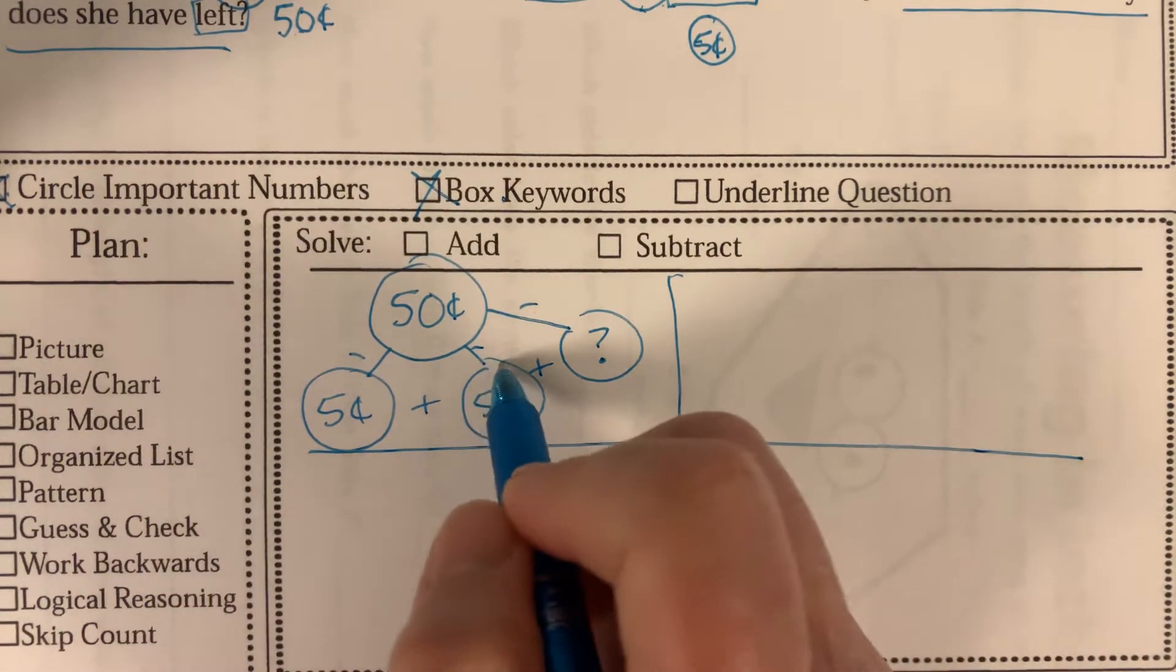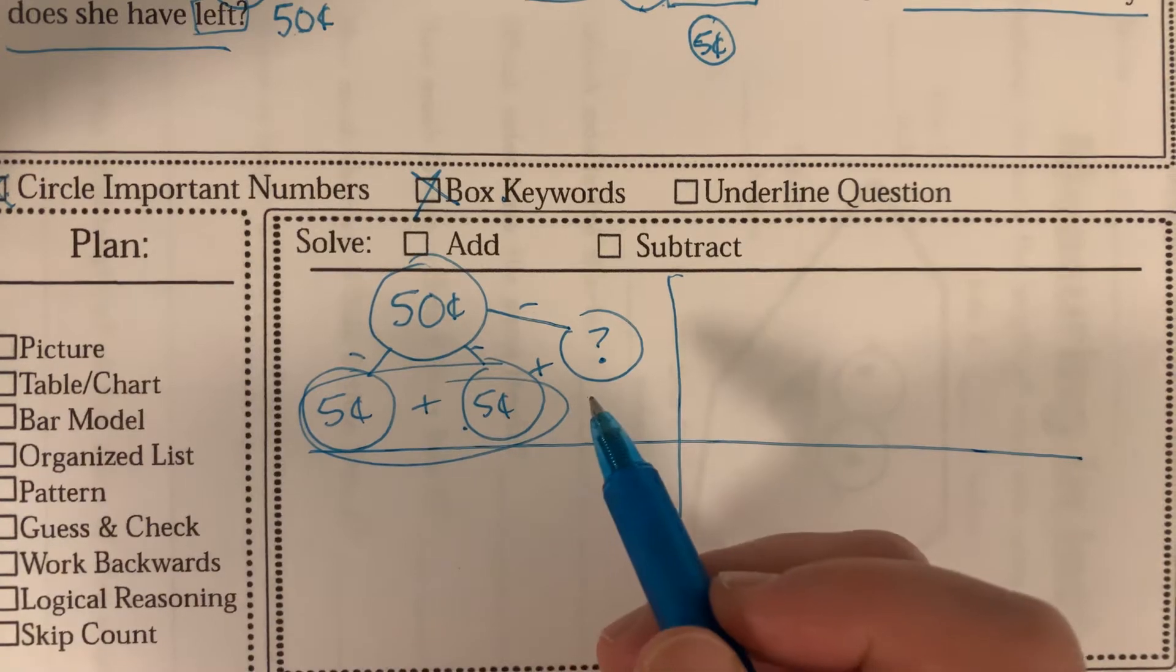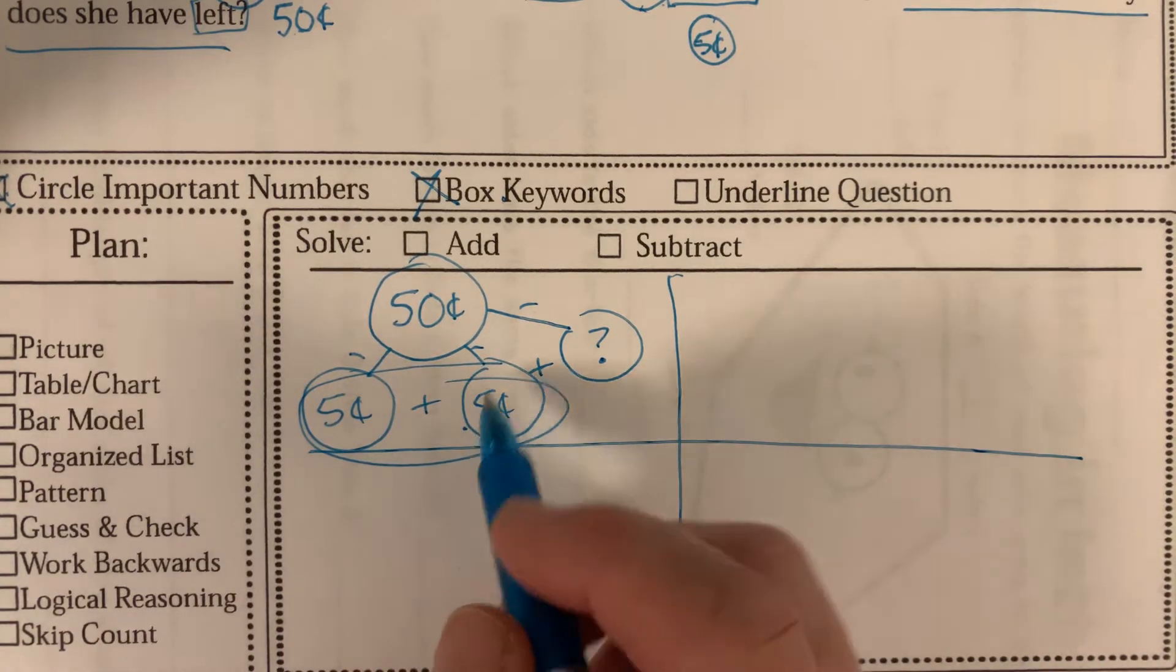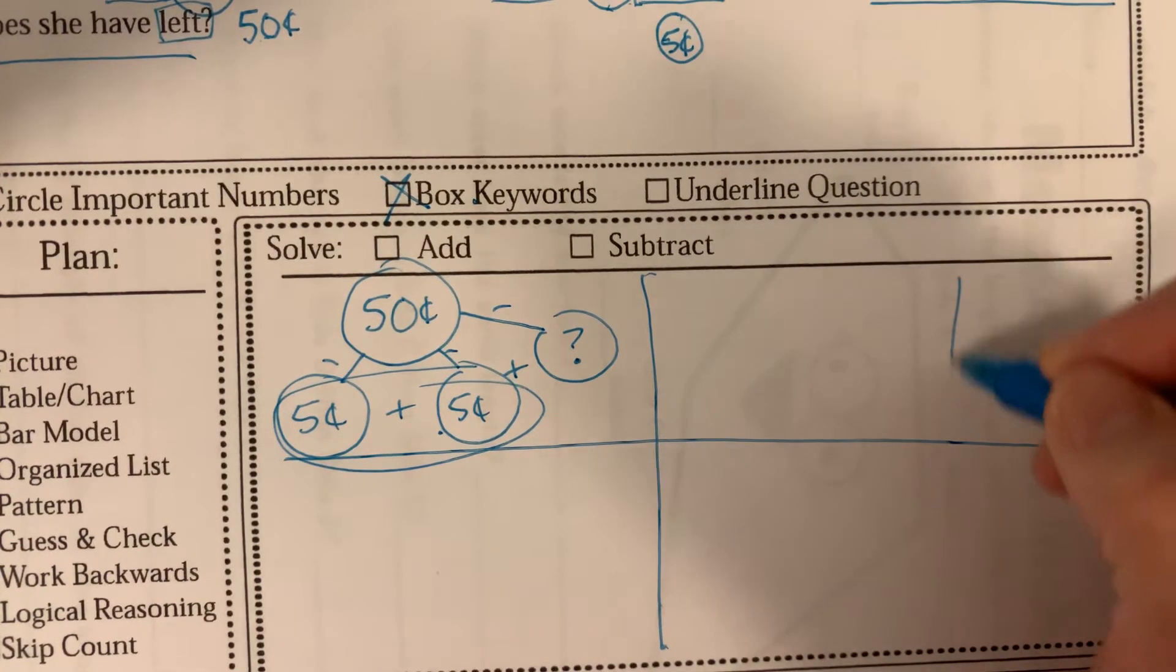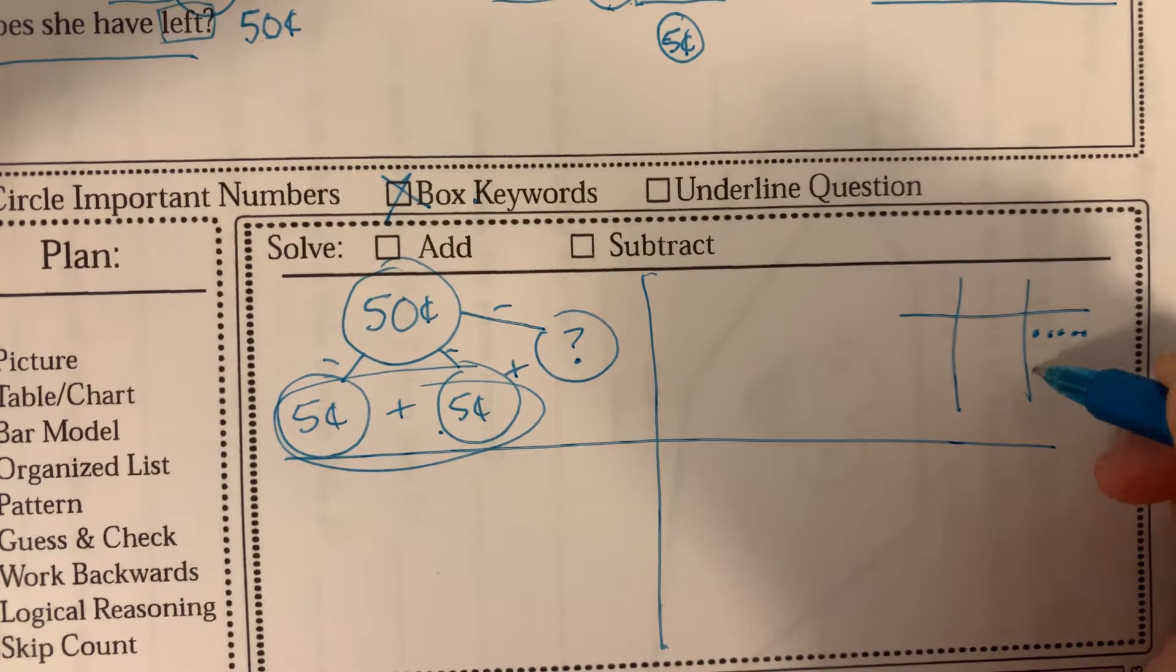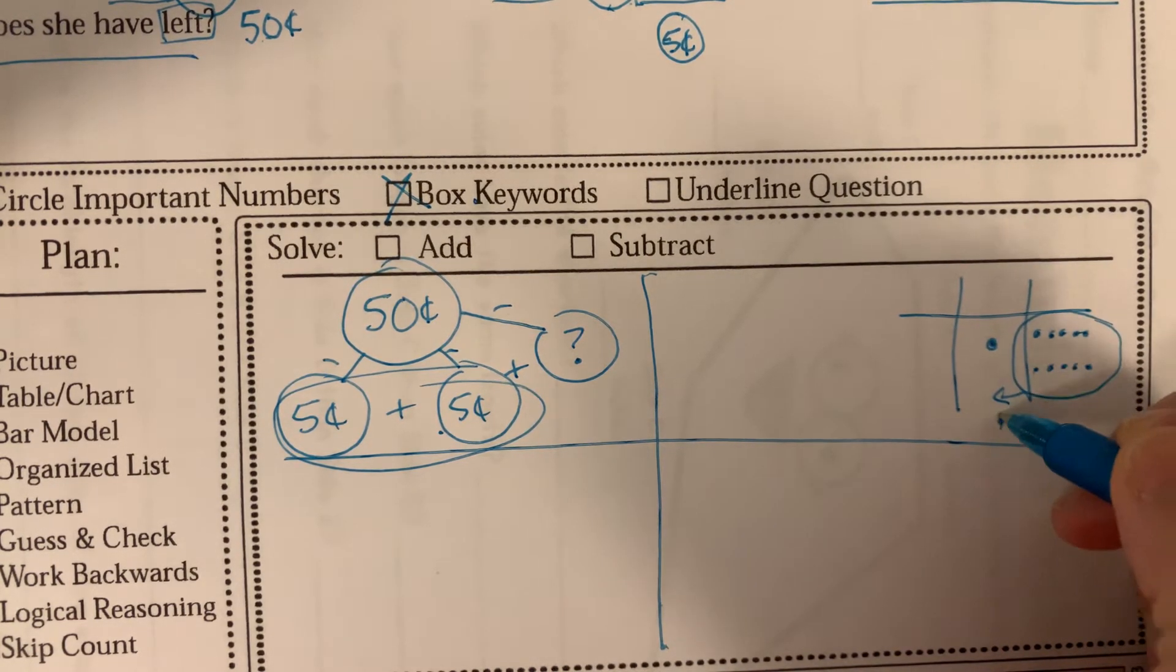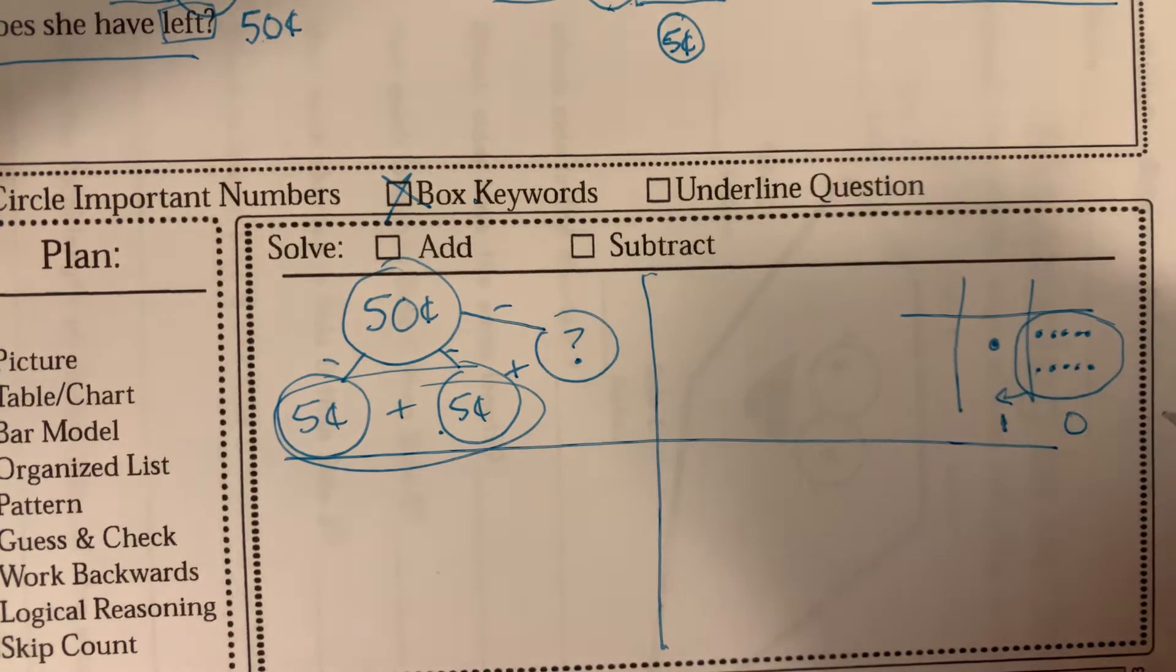So the first thing we could do is we could add these two. So five plus five is 10. You know that because of counting by fives. If you needed to prove it to yourself, you could just prove it like this. Bundle that up because there's 10 of those. Bring it over here. And then we have one 10, zero ones.